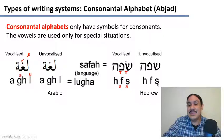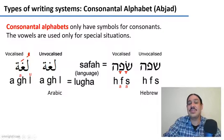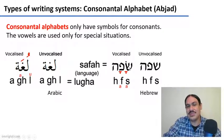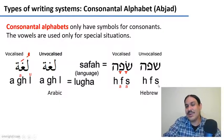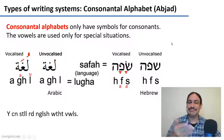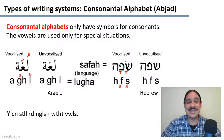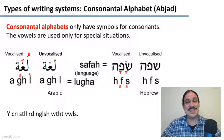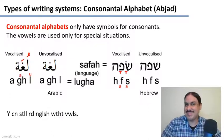In Hebrew, 'safah' is written with no vowels — just 's', 'f', 'h' — and you insert the vowels from your knowledge of the language. If you already speak Arabic or Hebrew, you know that a word spelled with 's', 'f', 'h' is probably 'safah', meaning language. You can even try reading an English sentence that uses only consonants — and yes, you can still read English without vowels too.